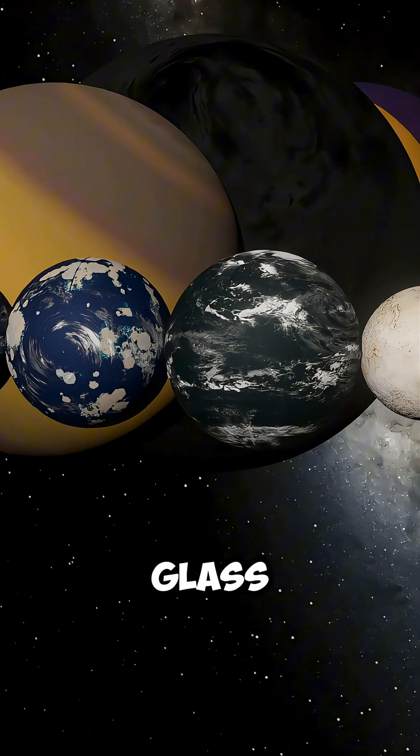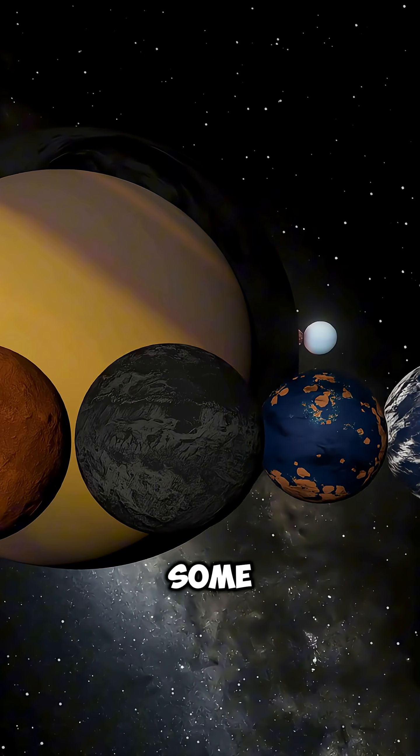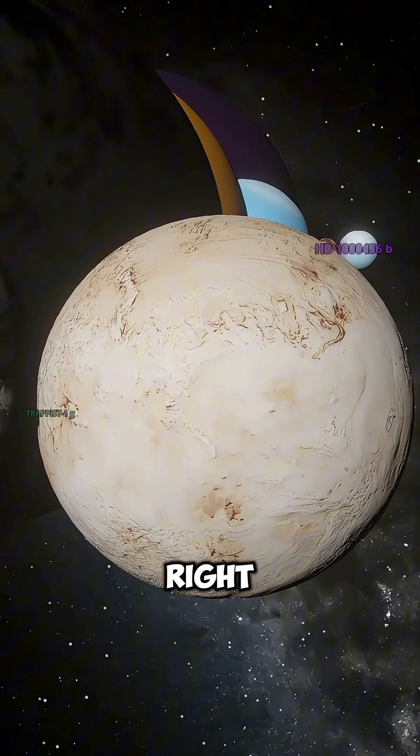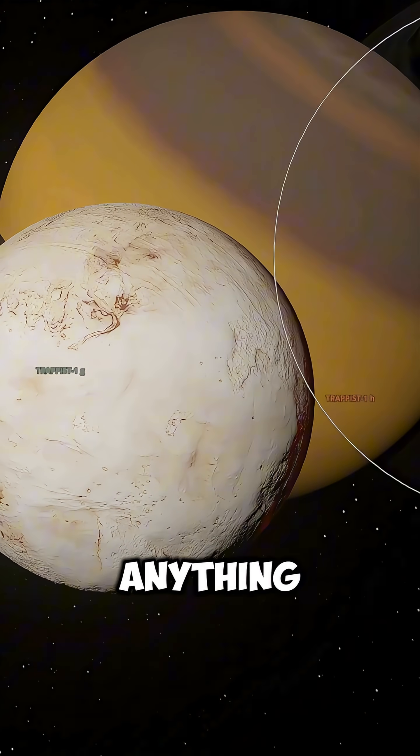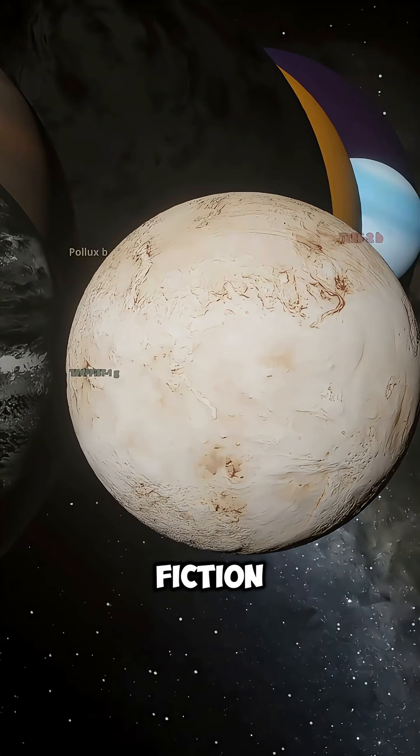Did you know there are planets where it rains glass, others made of diamond, and even some that float alone through space? That's right, exoplanets are way stranger than anything we've ever imagined in science fiction.